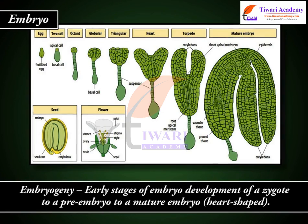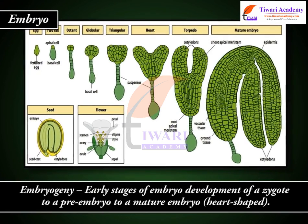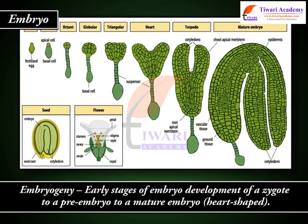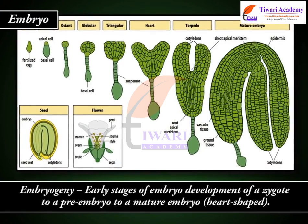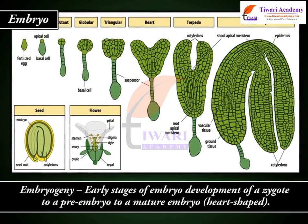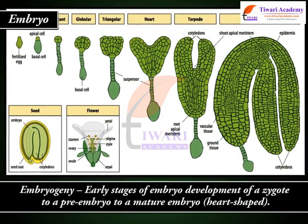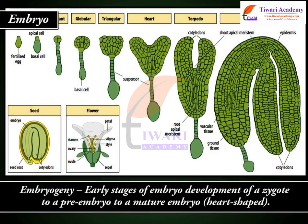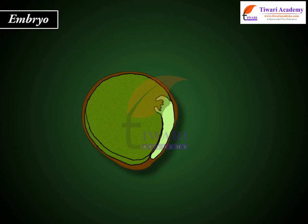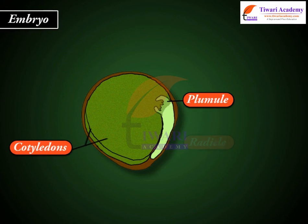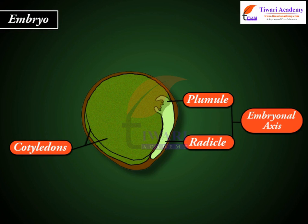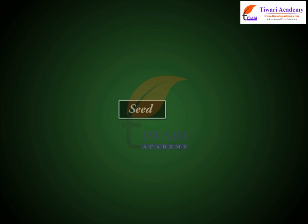Early stages of embryo development proceed from a zygote to a pre-embryo to a mature heart-shaped embryo. The embryo consists of cotyledons, plumule, radicle, embryonal axis, and seed cotyledons.